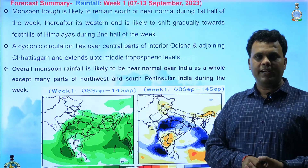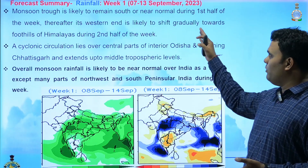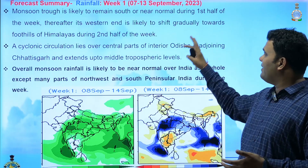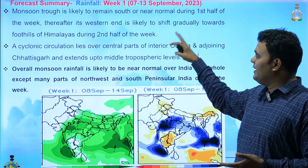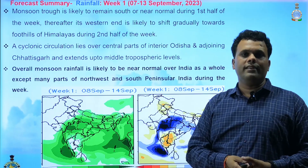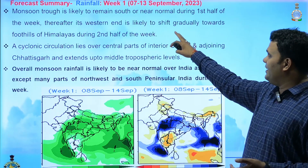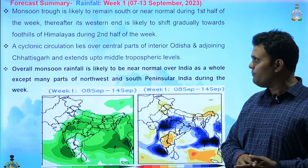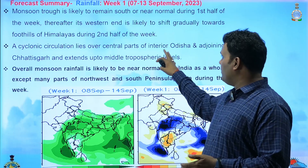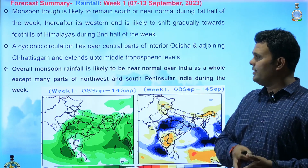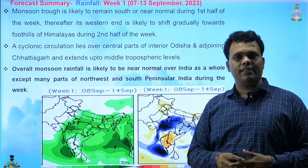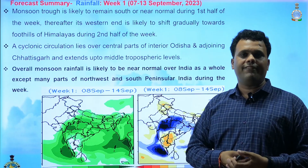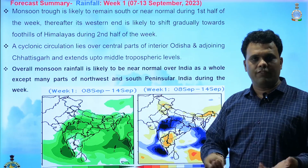Turning to the forecast: the monsoon trough is presently towards the southern side of its normal position and is likely to continue on the southern side during the first half of the coming week. Then its western end is likely to shift gradually towards the foothills of the Himalayas in the second half of the week. A cyclonic circulation is also present over central parts of interior Odisha and adjoining Chhattisgarh, extending up to middle tropospheric levels — the same cyclonic circulation remaining after the weakening of the low pressure area.